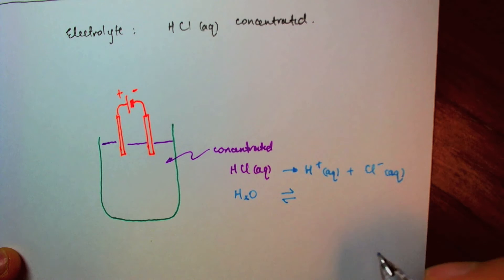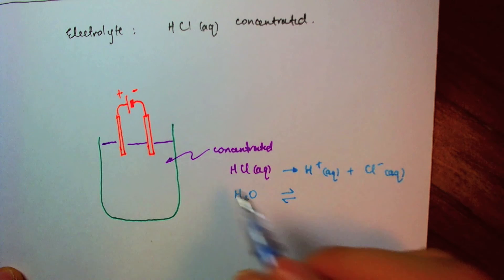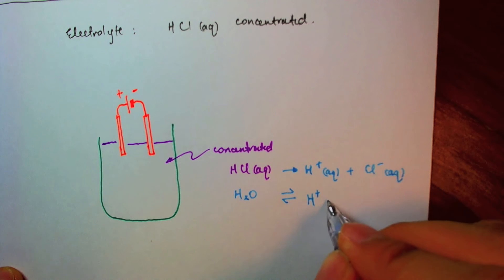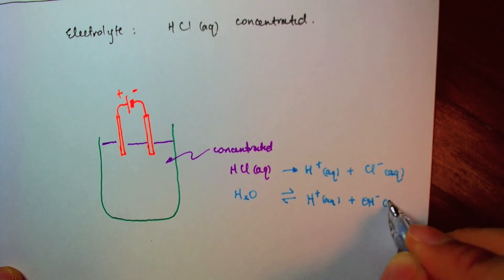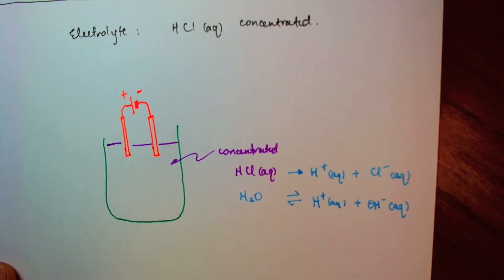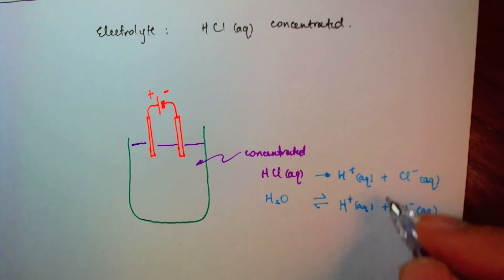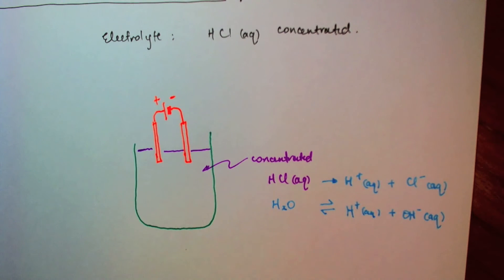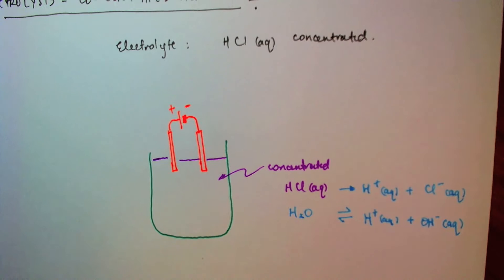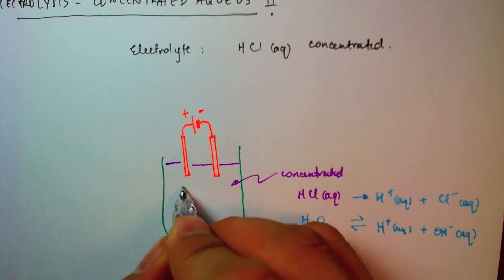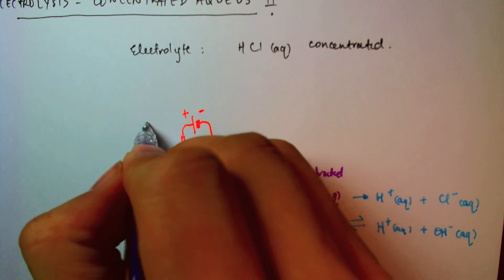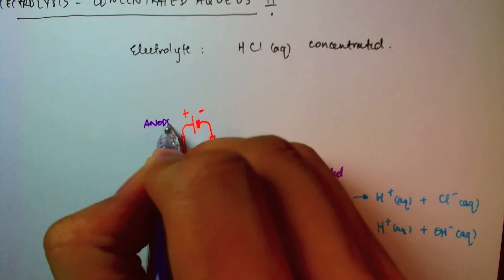So the negative ions will be attracted to the anode. So I'll write them below the anode, chlorine and hydroxide. Let's just name this the anode.